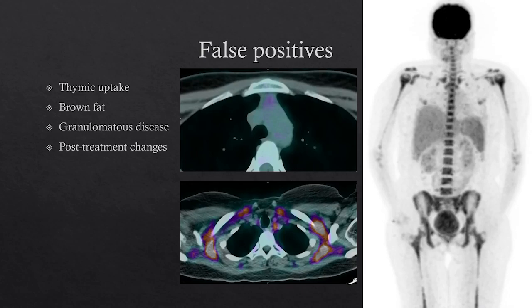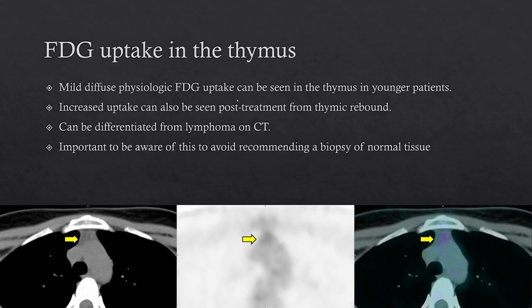Here's an example of FDG uptake in the thymus. You can see the thymus on CT, and on fused images there's uptake greater than the adjacent blood pool activity. This can be seen normally in younger patients, up to the mid-20s, and also in thymic rebound, which can occur even in older patients. It's important to differentiate this from any tumor suspected in this region — usually a concern in lymphoma — to avoid recommending biopsy of normal thymic tissue.